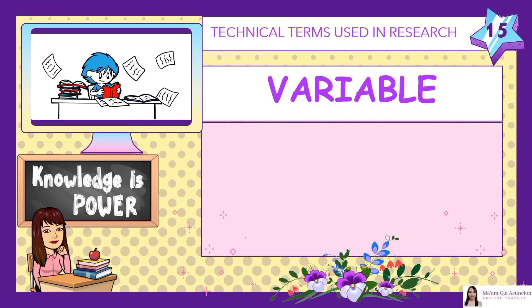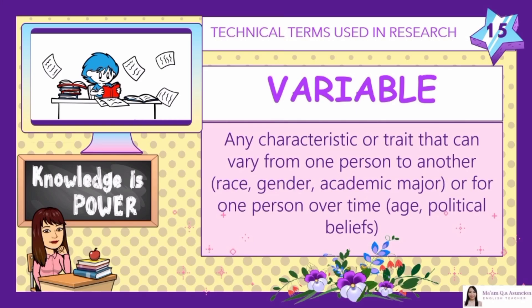Number 15: Variable. Any characteristic or trait that can vary from one person to another — race, gender, academic major — or for one person over time — age, political beliefs. A variable represents the measurable traits that can change over the course of a scientific experiment.